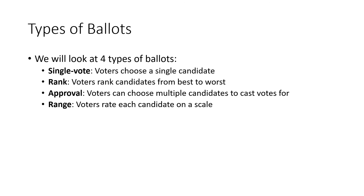The way we're going to do that is by thinking about the different kinds of ballots that we could use — some of which we've already talked about and some of which are going to be a little bit new. We're going to have four types of ballots. A single vote ballot is where voters choose a single candidate. A rank ballot is where voters rank the candidates from best to worst. An approval ballot is where voters can choose multiple candidates to cast votes for. And a range ballot is where voters rate each candidate on a scale.